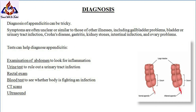Diagnosing appendicitis can be tricky — symptoms are often unclear or similar to those of other illnesses, including gallbladder problems, bladder or urinary tract infection, Crohn's disease, gastritis, kidney stones, intestinal infection, and ovary problems.